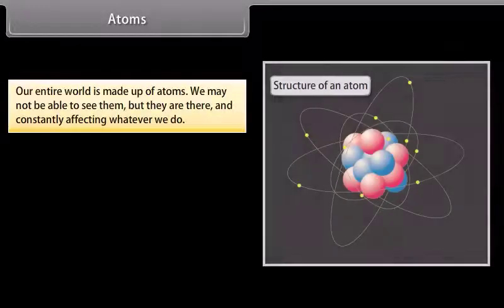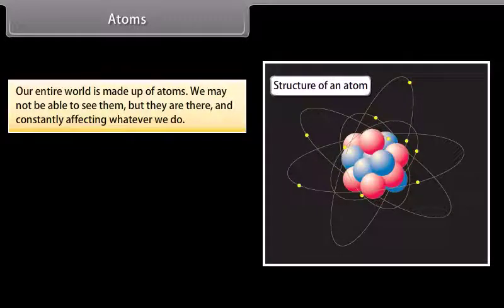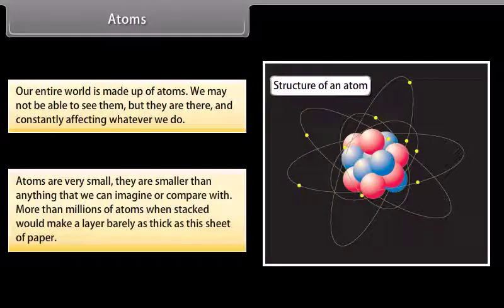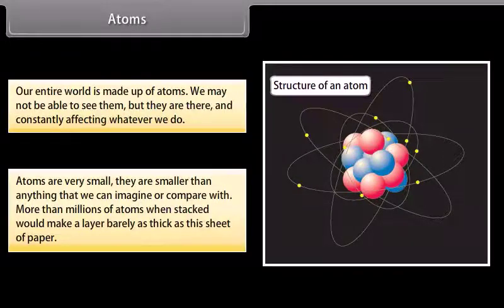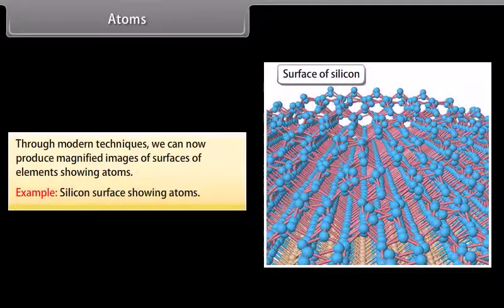Our entire world is made up of atoms. We may not be able to see them, but they are there, and constantly affecting whatever we do. Atoms are very small. They are smaller than anything that we can imagine or compare with. More than millions of atoms when stacked would make a layer barely as thick as this sheet of paper. Through modern techniques, we can now produce magnified images of surfaces of elements showing atoms. Example: Silicon surface showing atoms.